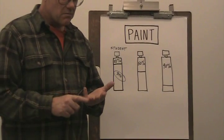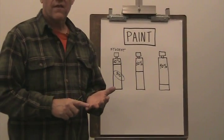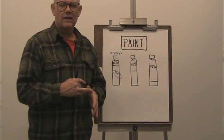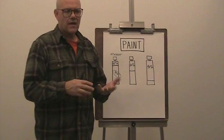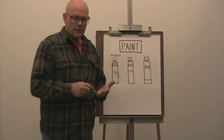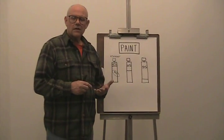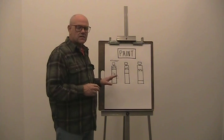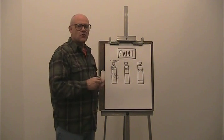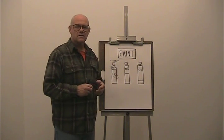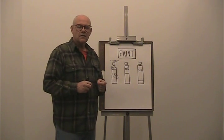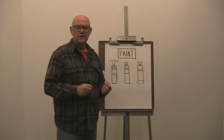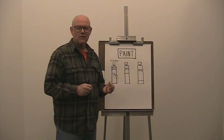There can be dryers, emulsifiers, thickeners, antifungal agents, antibacterial agents. In the case of acrylics, there can be ammonia in there. There can be a number of things. If you look at student grade paints as the equivalent of highly processed food — sort of junk food.